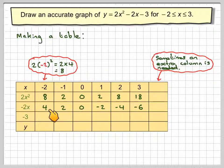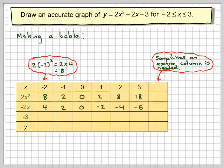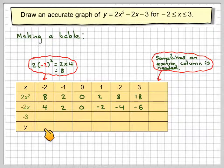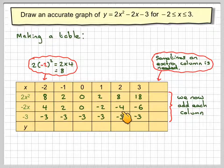To each of these values we will add minus 3, because that's the constant term. So this row here will be minus 3 for every column — minus 3, minus 3, minus 3, minus 3, minus 3, minus 3. These three rows are just for the working out, and all we need to do, provided we put the negative signs in the right place, is to add each column.